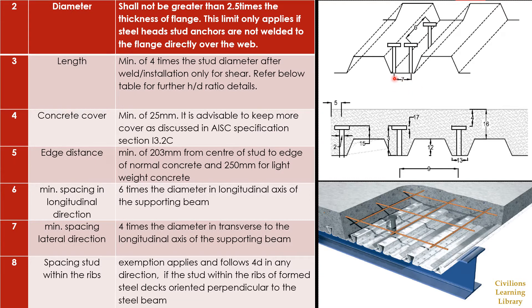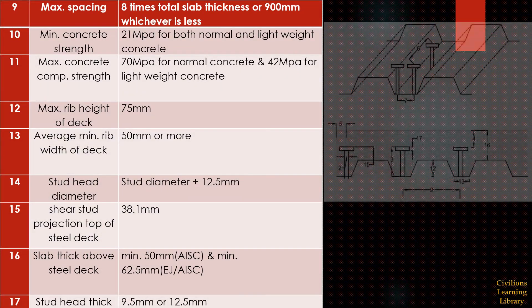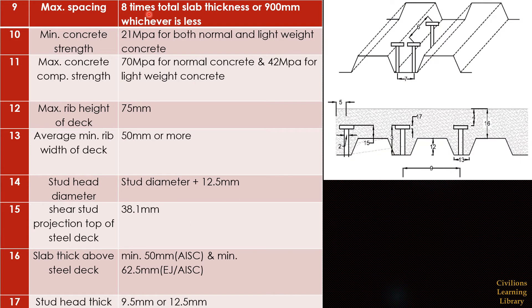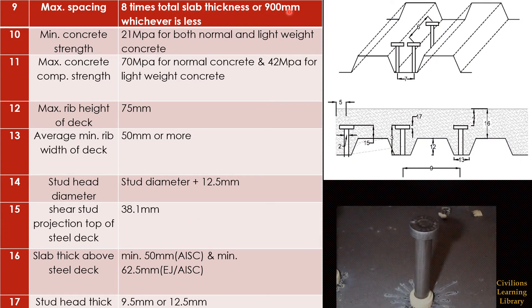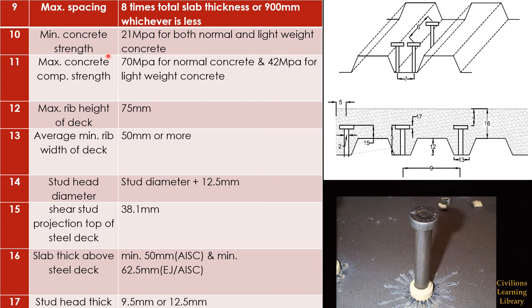Spacing in the transverse direction should be at least 4 times the diameter of the bar. For studs within the ribs of formed steel deck oriented perpendicular to the steel beam, a minimum spacing of 4 times the diameter applies in any direction. The maximum spacing is 8 times the total slab thickness or 900 mm, whichever is less.